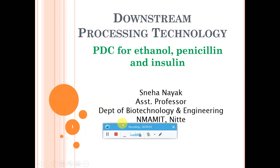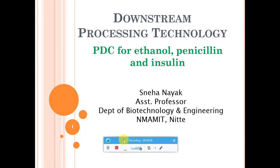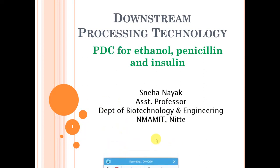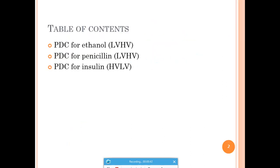Welcome to today's lecture on PDC for Ethanol, Penicillin and Insulin Production. We will discuss the process design criteria for large-scale production of ethanol, penicillin and insulin. Ethanol and penicillin are low value high volume products, whereas insulin comes under high value low volume products. We will see exactly how these are produced and how the DPT steps are done at large scale.